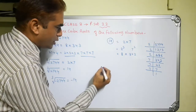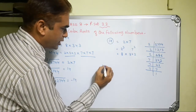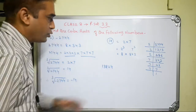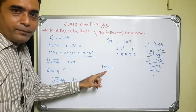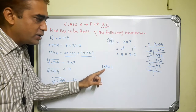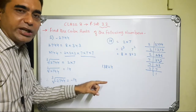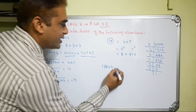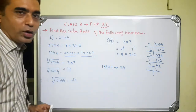One more thing to note: if a number like 13,824 is greater than 8000, then its cube root will be greater than 20. And with unit place digit 4, the cube root will be greater than 24.